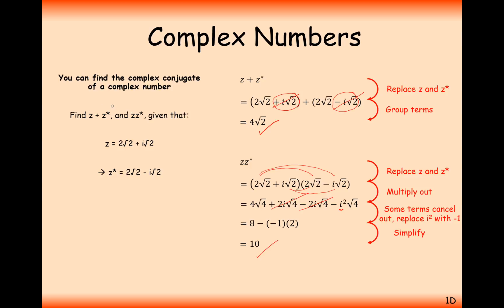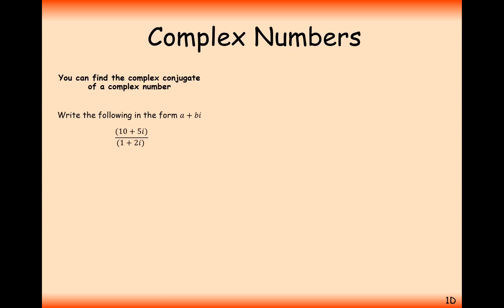Once again, no imaginary parts, because they always cancel out due to the nature of how we've made the conjugates. Now let's see if we can use the complex conjugate to divide two complex numbers by each other. With division, you'll need to think about multiplying the numerator and denominator by the complex conjugate.